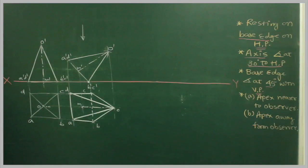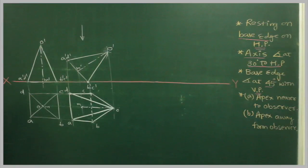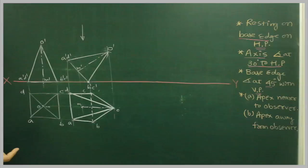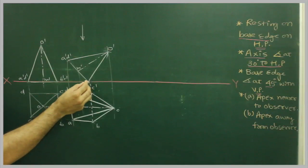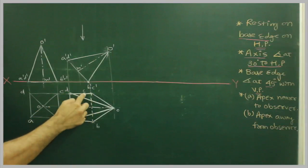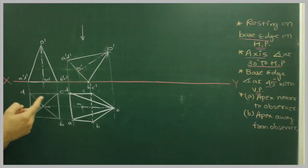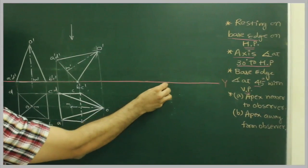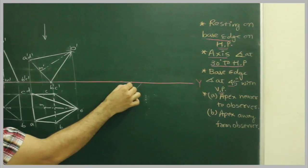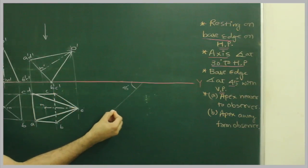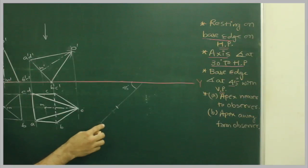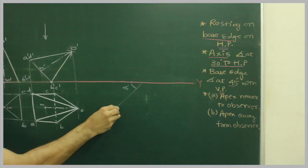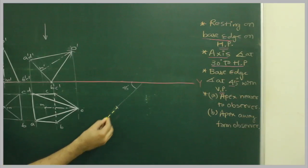Now, the base edge is inclined at 45 degrees. In this stage there are two conditions: apex nearer to the observer and apex away from the observer. First we will talk about the base edge — BC is the base edge on which the pyramid is resting on the horizontal plane. So BC is inclined at 45 degrees. First we will draw Case A where apex is nearer to the observer, so we will take 45 degrees. We will take BC and cut on this side.